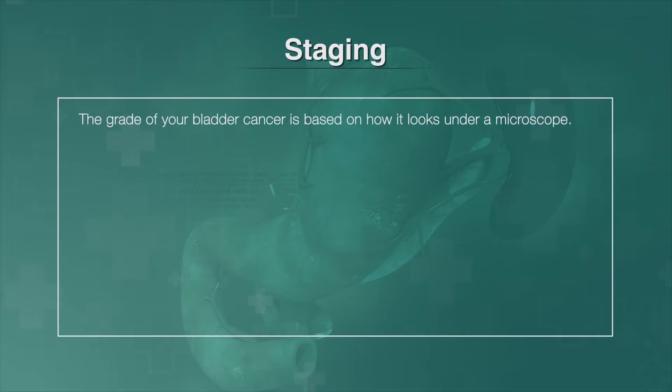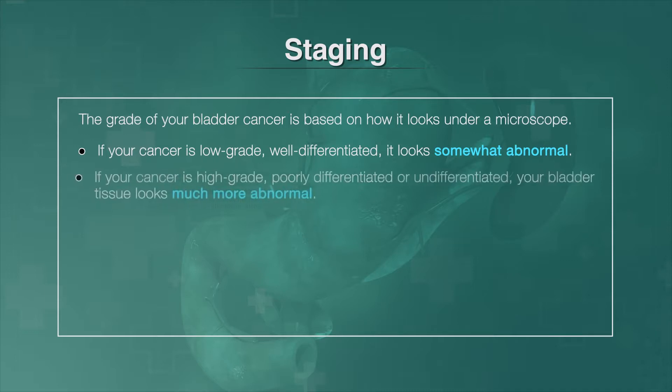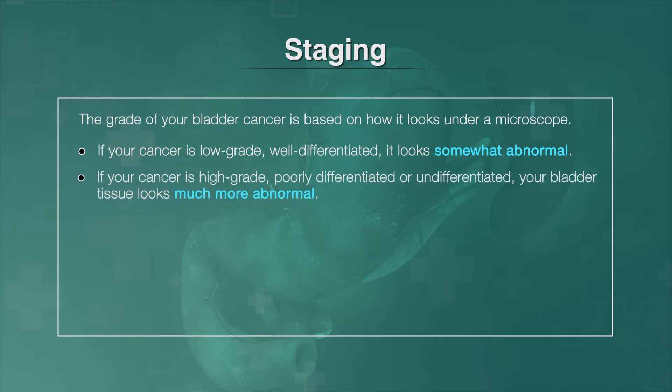The grade of your bladder cancer is based on how it looks under a microscope. If your cancer is low-grade, or well-differentiated, it looks somewhat abnormal. If your cancer is high-grade, poorly differentiated, or undifferentiated, your bladder tissue looks much more abnormal.